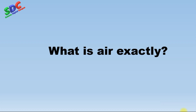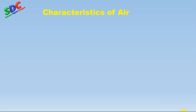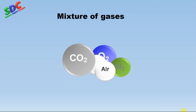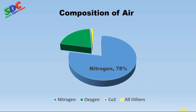Now the question is: what is air exactly, and what does it contain? Air is essential — all living beings like humans, animals, and plants live and breathe it. Air has no definite shape, no volume, no color, and no smell. It is a mixture of different gases.